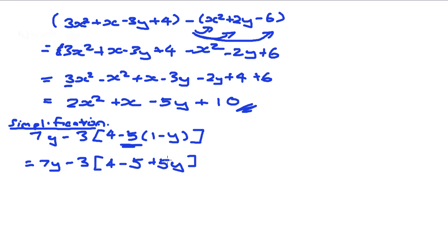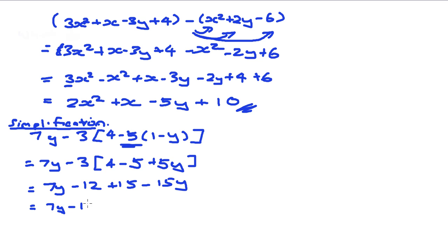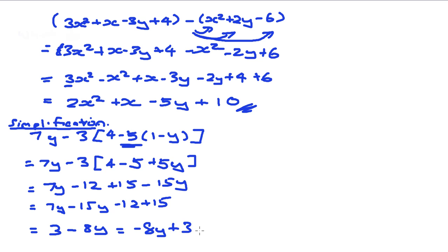Now it looks simpler with only one bracket. Going further: 7y, then minus 3 times 4 gives minus 12, minus 3 times minus 5 gives plus 15, and minus 3 times 5y gives minus 15y. Putting like terms together: 7y minus 15y gives minus 8y, and the constant terms minus 12 plus 15 gives 3. So the final simplified answer is 3 minus 8y. The order is just a personal preference — minus 8y plus 3 is also correct.